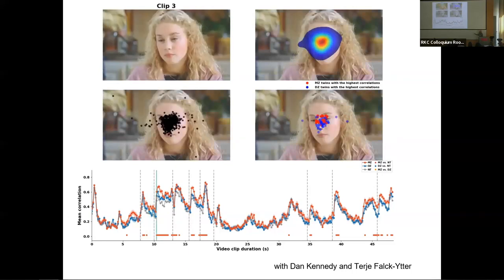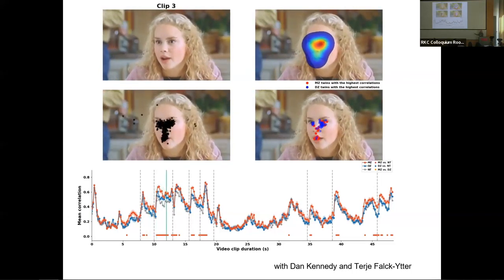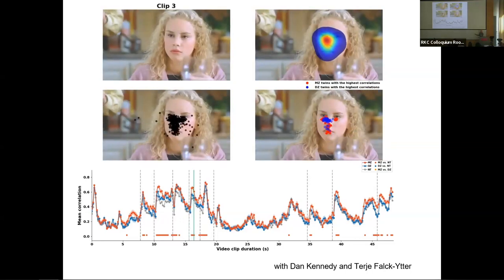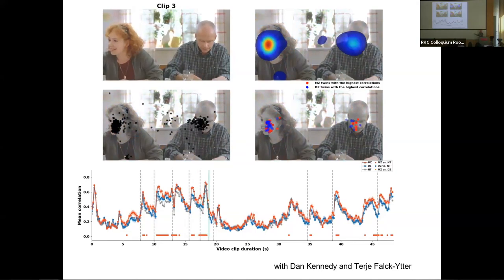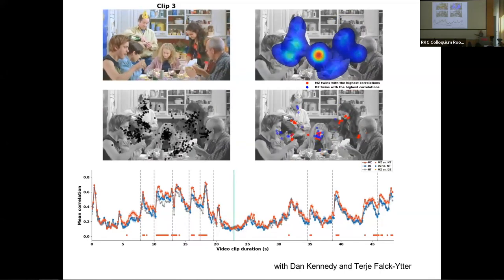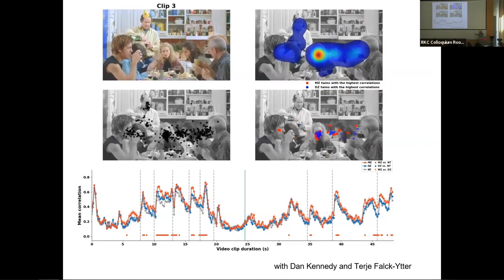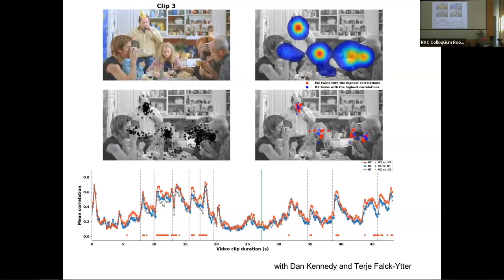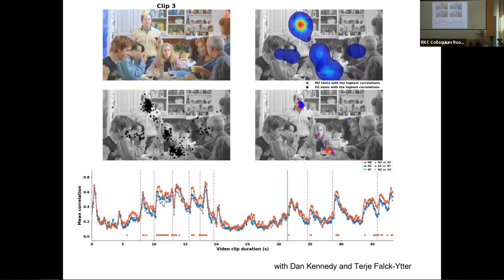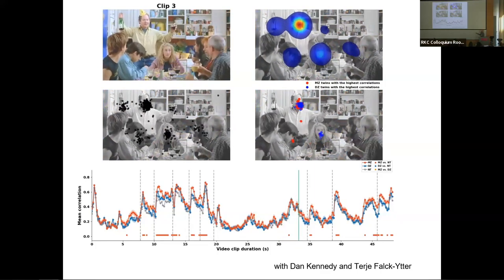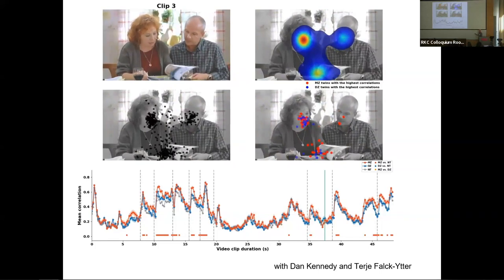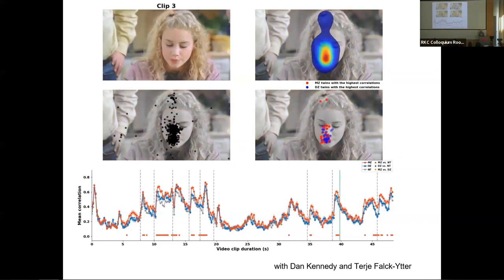So each black dot here is one participant. You can see that there are lots of state variables that drive the correlation in their gaze. If there's a face, everybody looks at the face, for instance. What's shown at the bottom here is the correlation as a function of breaking down these participants in terms of identical twins in red, paternal twins in blue, and genetically unrelated pairs of children in gray. And you can see that there's a strong heritable effect in the sense that the monozygotic twin pairs look more similarly at this video than do the dizygotic ones and who look more similarly than the genetically unrelated ones.